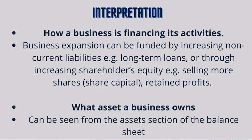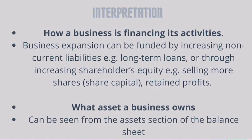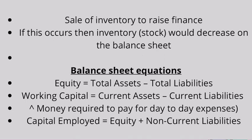Let's look at the interpretation of a balance sheet. How is a business financing its activities? Business expansion can be funded by increasing non-current liabilities like long-term loans, or through increasing shareholders' equity like selling more shares and retained profits. What assets a business owns can be seen from the assets section of the balance sheet. If sale of inventory is used to raise finance, then stock would decrease on the balance sheet.